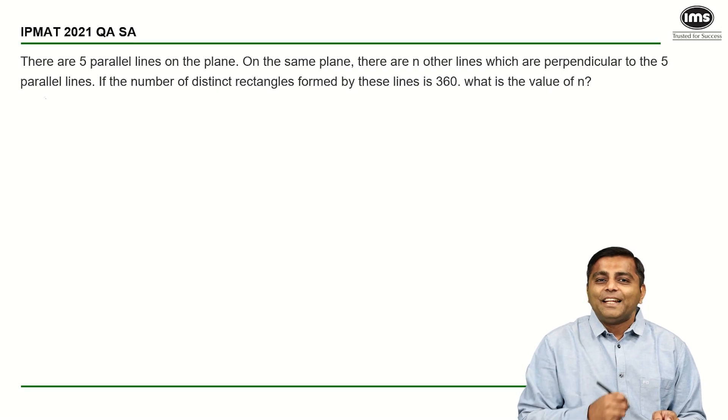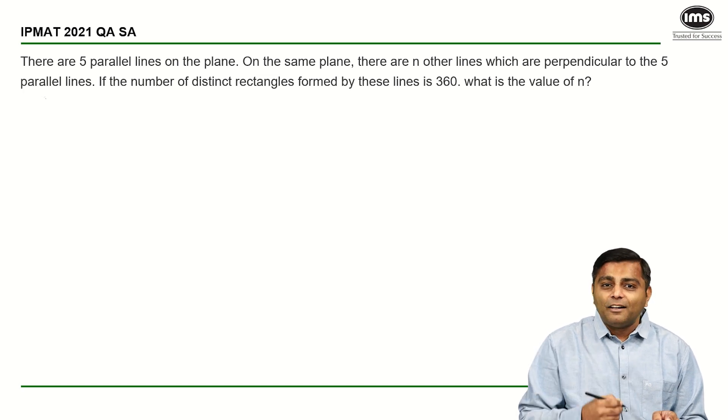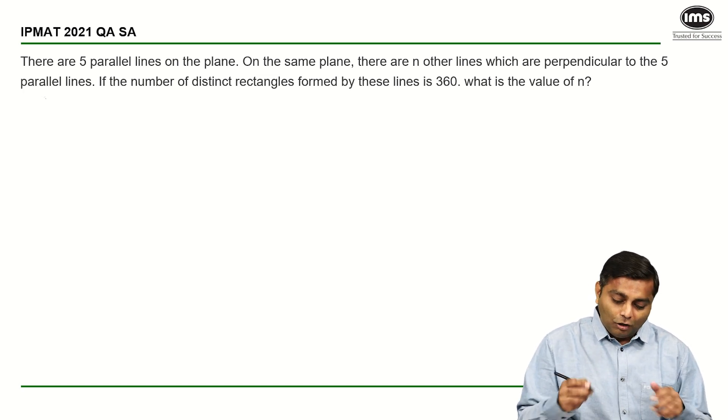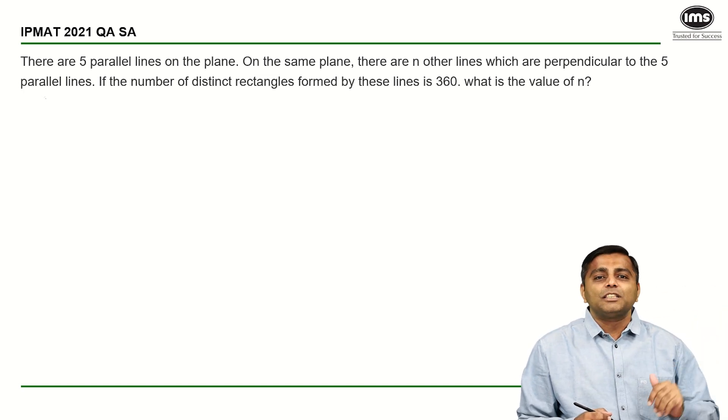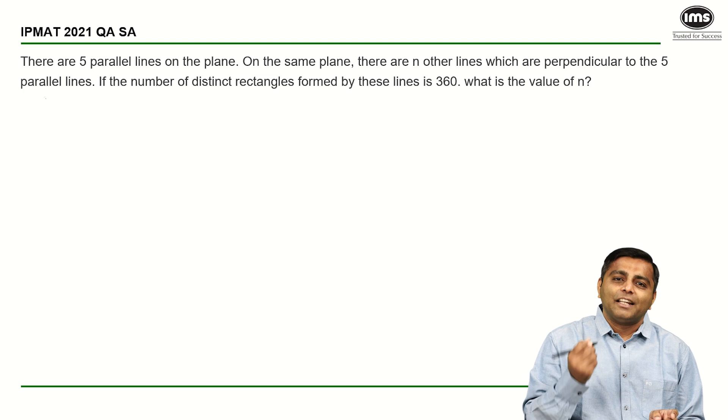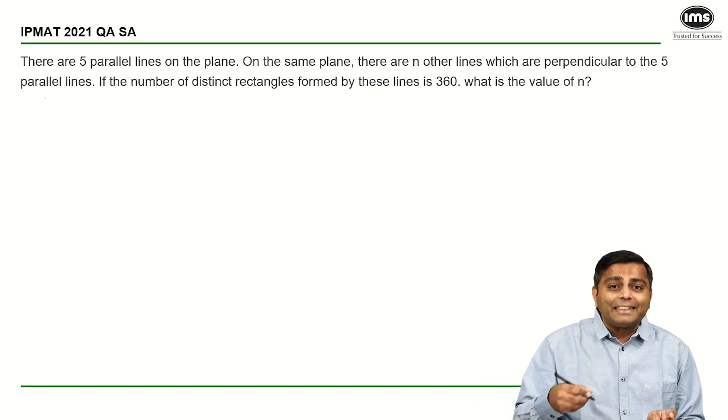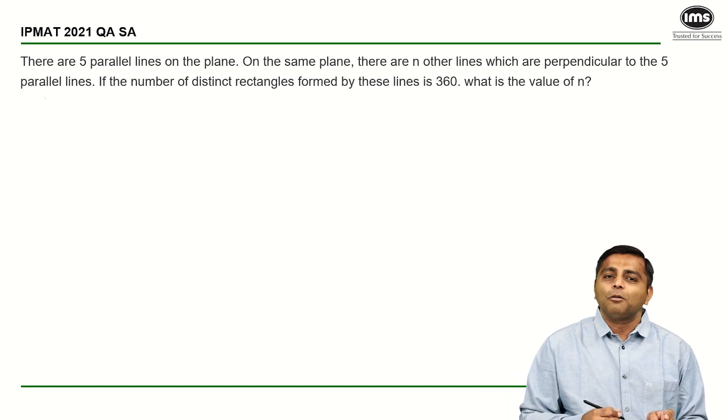Okay, so let's see the solution. The question says that there are five parallel lines on a plane and there are N other parallel lines perpendicular to these five parallel lines and we are given that there are 360 rectangles formed. What is the value of N?